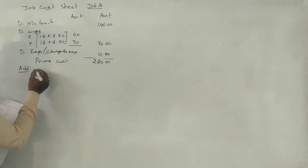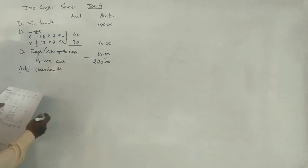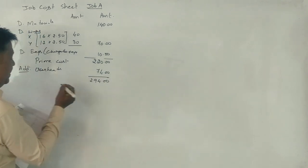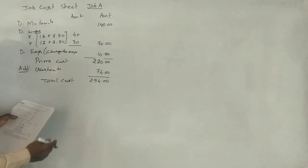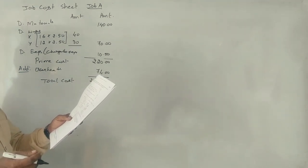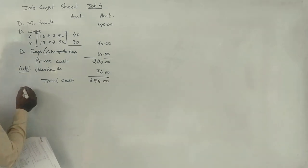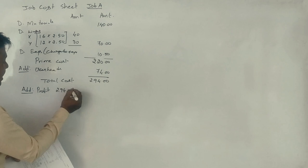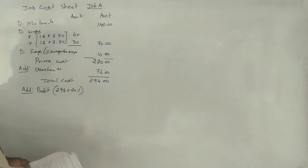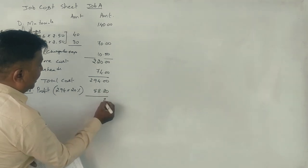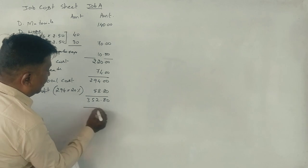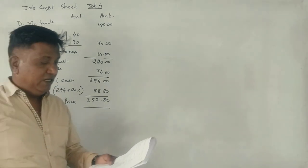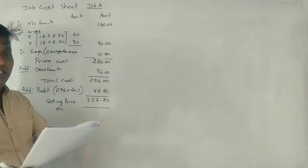Now, add overheads of 74 rupees. The total cost is 294 rupees. Add 20% on total cost to determine the selling price. Profit is based on the total cost of 294 rupees. Draw up the job cost sheet accordingly.